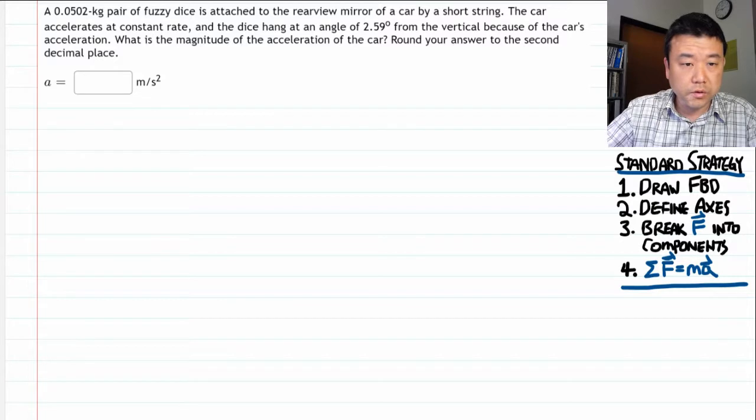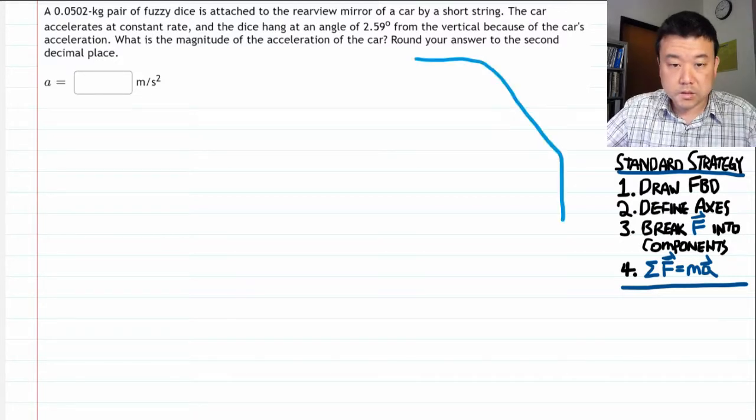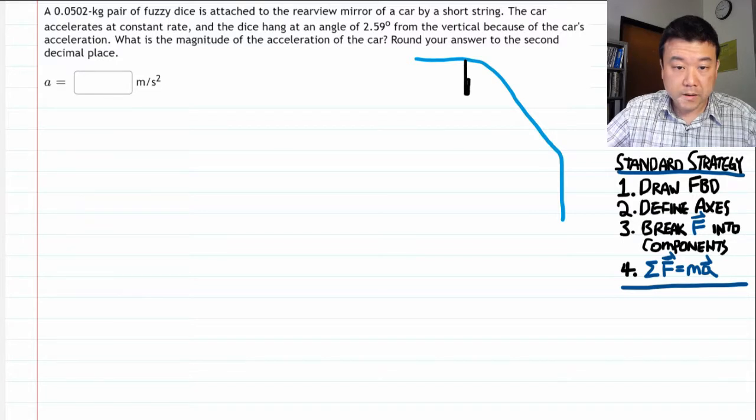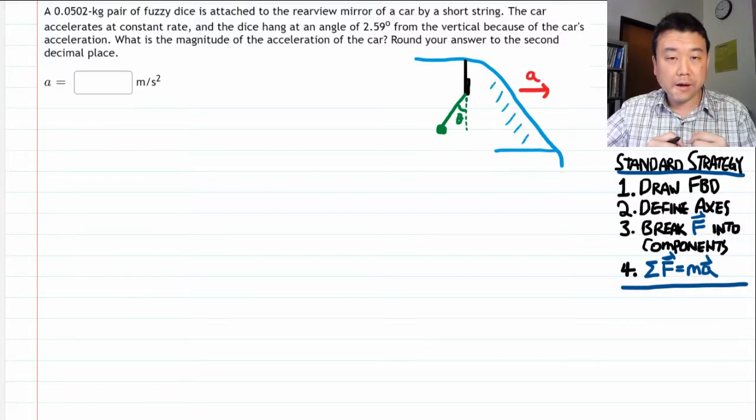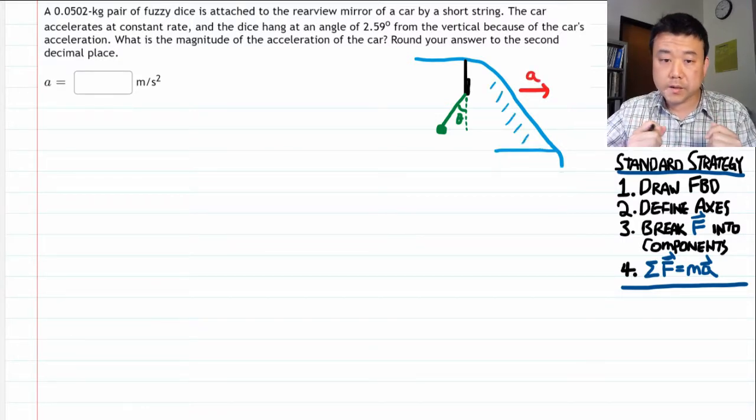So let me start by drawing the car. This is the rear view mirror that the dice will be hanging from. And it says dice hangs at some angle, and all this is happening while the car is accelerating forward. All right, I want you to pause for a bit and make sure that this picture makes sense.